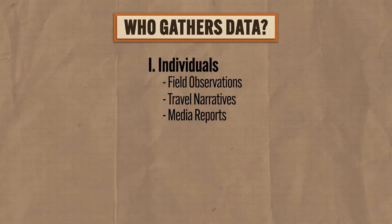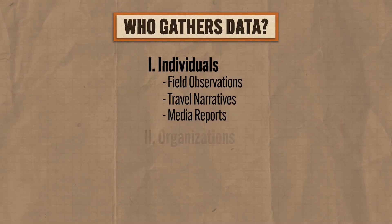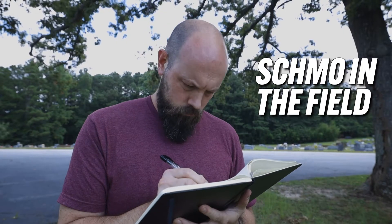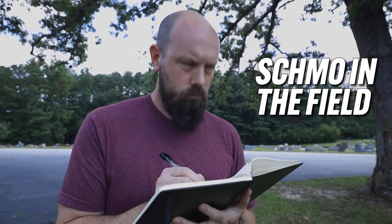Now the second kind of entity concerned with gathering geographic data are organizations — they can be businesses or government agencies or whatever. These organizations tend to have much larger budgets so they can gather data at a much larger scale than the individual out in the field with his notebook writing field observations.